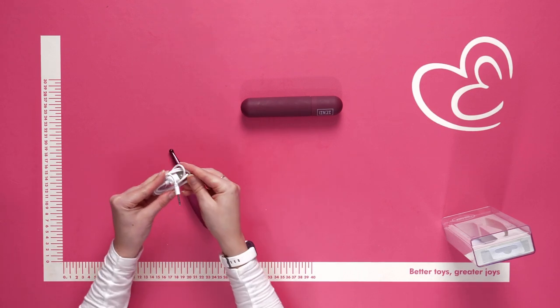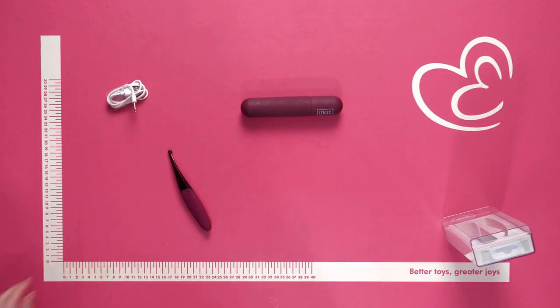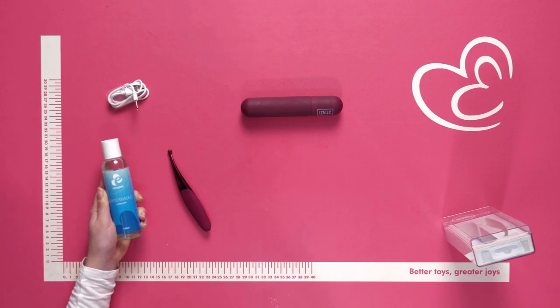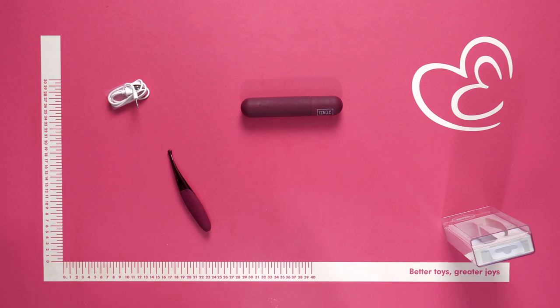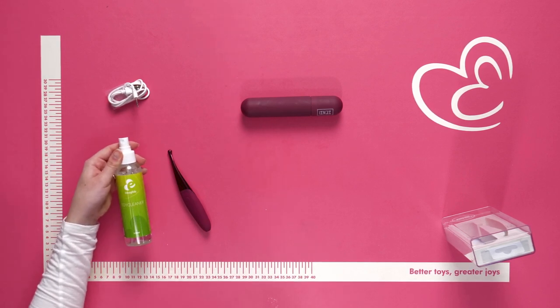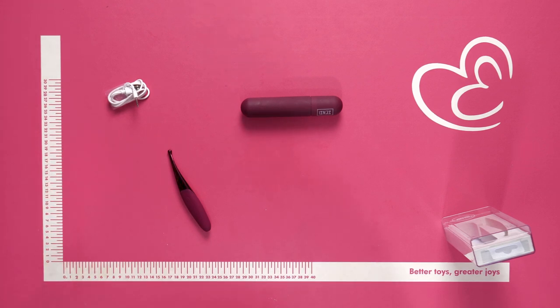When using this Sensi vibrator, we recommend using a water-based lubricant for extra comfort during use. And of course, make sure to clean the vibrator after every use. For this we recommend using a toy cleaner and lukewarm water. Alternatively, you can also use a mild antibacterial soap and lukewarm water as well.